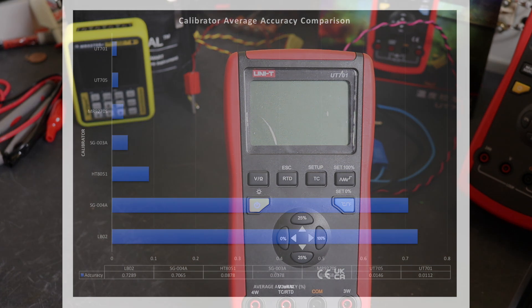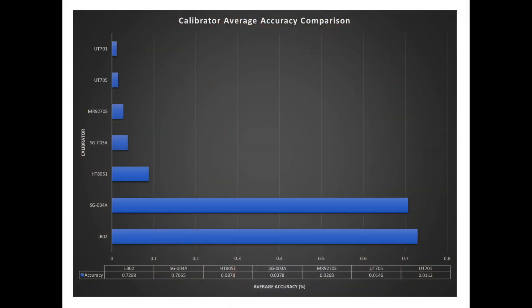We'll just put this plot here as well. This is a comparison of the average accuracy of all the calibrators that I've tested. The UT701 there, its average accuracy is better than anything else I've tested up to this point here. And you can see the UT705 is just below that. So that is a combination, seems to make quite a good pair. After that we've got the MR9270S, and of course that includes a lot more functionality than is offered by the UNITY units. But it's very good performance really, all things considered.